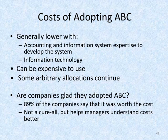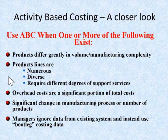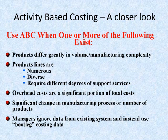ABC is not, however, a cure-all. As a controller for one Midwest manufacturer said, ABC will not reduce costs — it only helps you better understand your costs so you know where you can correct things. You really want to use ABC costing when products differ greatly in volume or manufacturing complexity, when product lines are numerous and diverse requiring different degrees of support, when overhead costs are a significant portion of total costs, when there is significant change in manufacturing processes or the number of products, or when managers ignore data from the existing system and instead use informal costing data.